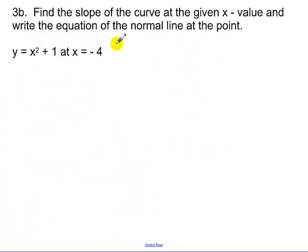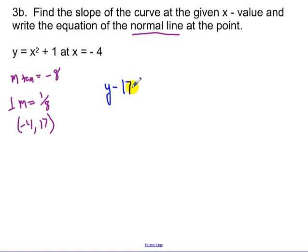Find the slope of the curve at any given x value and write the equation of the normal line. Well, this should hopefully look familiar. We just did essentially this example. Remember, the slope of our tangent was equal to negative 8. So our perpendicular slope is 1 eighth. Remember, the point on our curve was the point of negative 4, 17. So again, using point slope formula, that's the equation of our line.